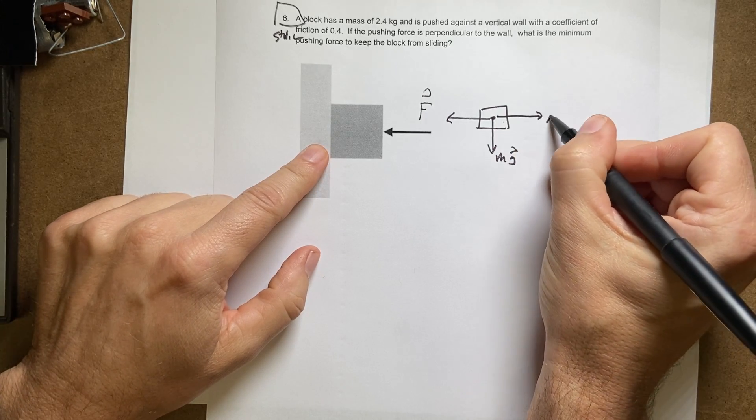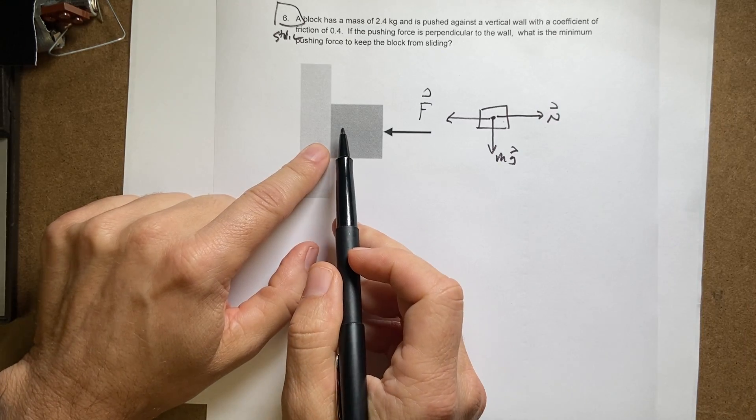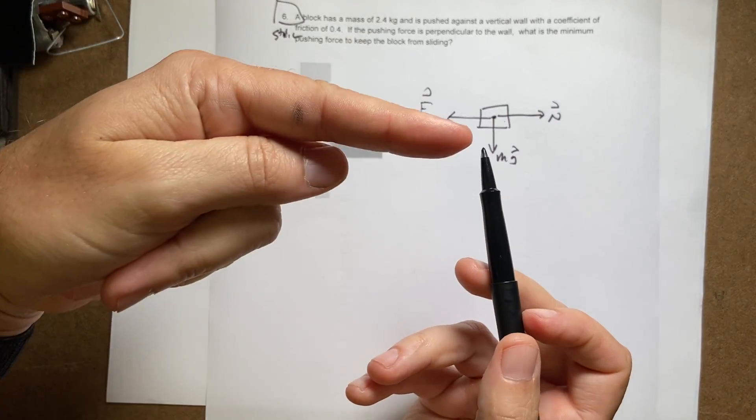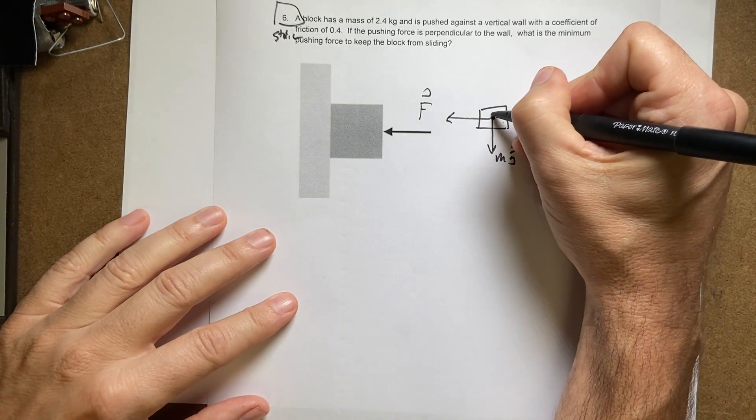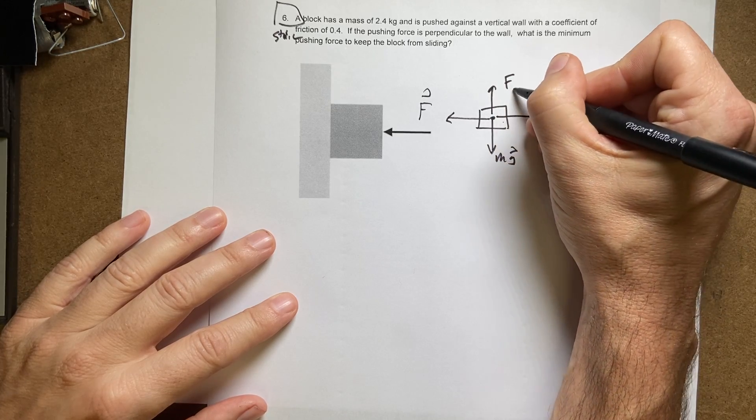Well, there is another force. There's a normal force pushing back this way. Because that's perpendicular to the wall. The wall is this way, right? So it's pushing that way. And then finally, what pushes up to keep it from sliding? The frictional force.